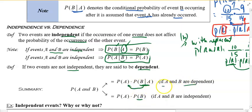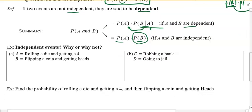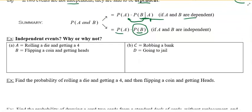So if it's independent, it really wouldn't matter — I just say probability of A times probability of B, and that's that. Here, they want to see if we have the same common sense. Are those events independent? Why or why not?